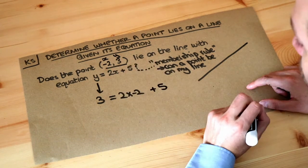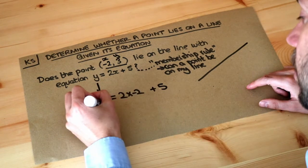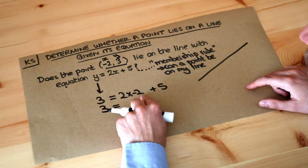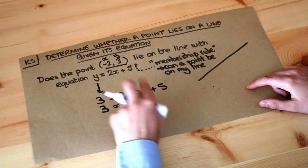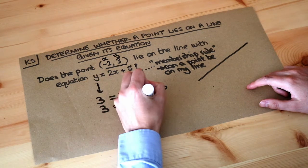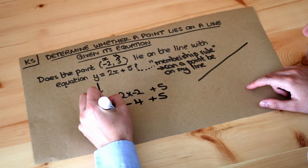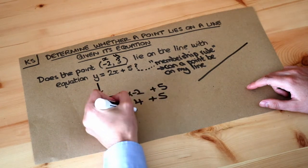Now let's see if this equation is true. Well, 2 times -2: positive times negative is negative, and 2 times 2 is 4, so it's -4 plus 5, and -4 plus 5 is 1.